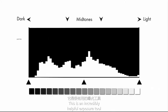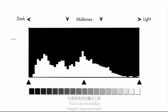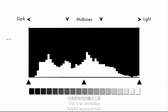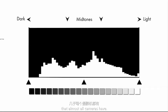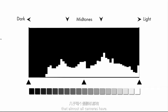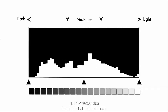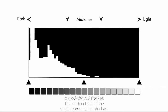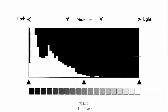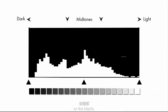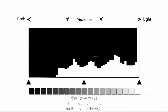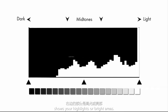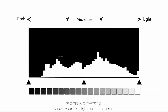If your camera has a histogram, use it. It's an incredibly helpful exposure tool that almost all cameras have. The left-hand side of the graph represents the shadows or blacks, the middle section is mid-tones, and the right shows your highlights or bright areas.